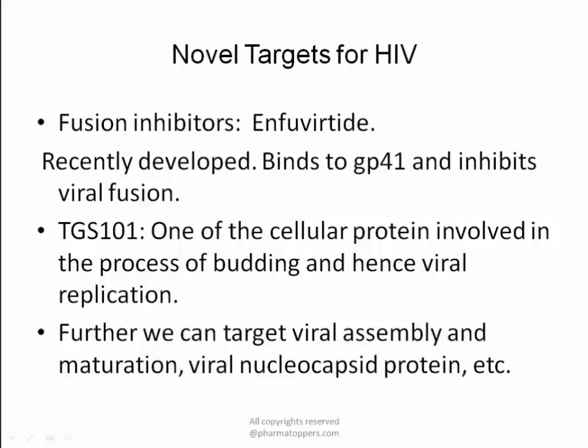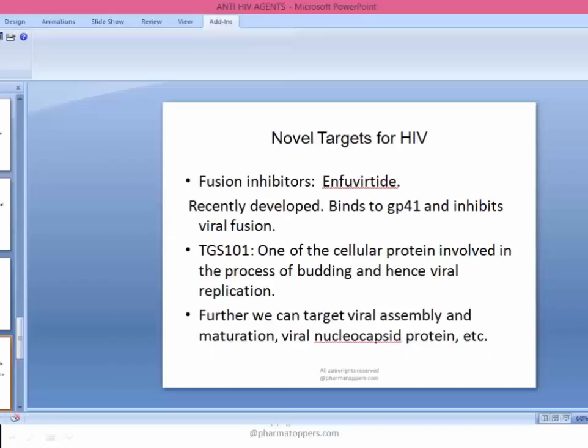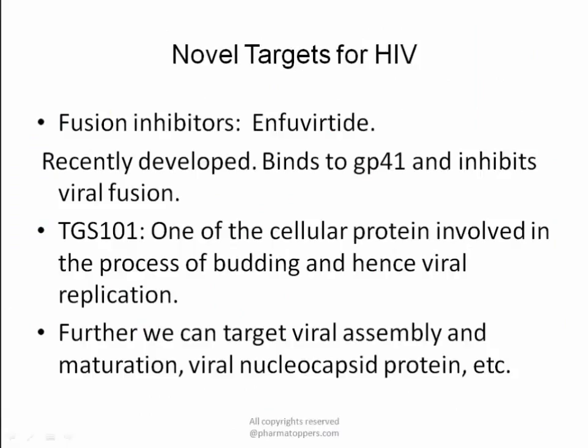Certain novel targets include fusion inhibitors. As the name suggests, fusion inhibitors inhibit the binding of the virus to the host cell membrane, thereby stopping replication. Next, we have TGS101, a cellular protein involved in the process of budding and hence viral replication. Once the virus enters the host cell, viral protein synthesis, maturation, assembly, and finally budding occur.